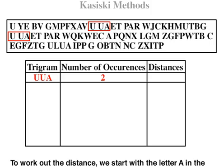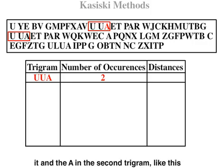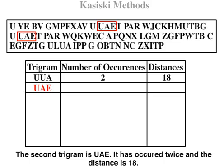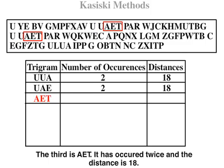To work out the distance, we start with the letter A in the first trigram and count how many characters are between it and the A in the second trigram — a distance of 18. The second trigram is U-A-E; it has occurred twice and the distance is 18. The third trigram is A-E-T; it has occurred twice and the distance is 18.